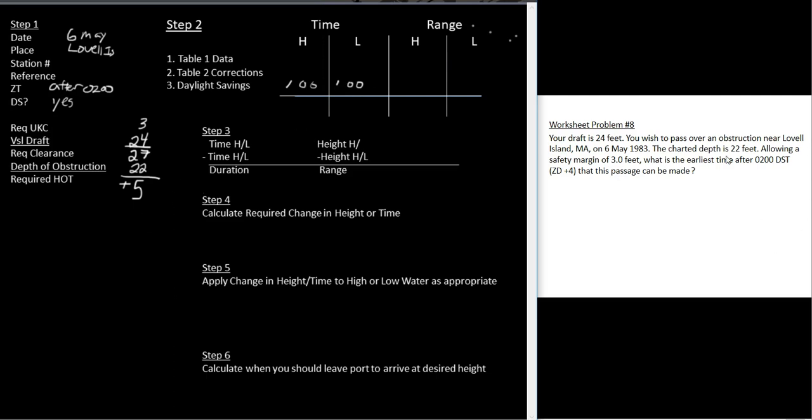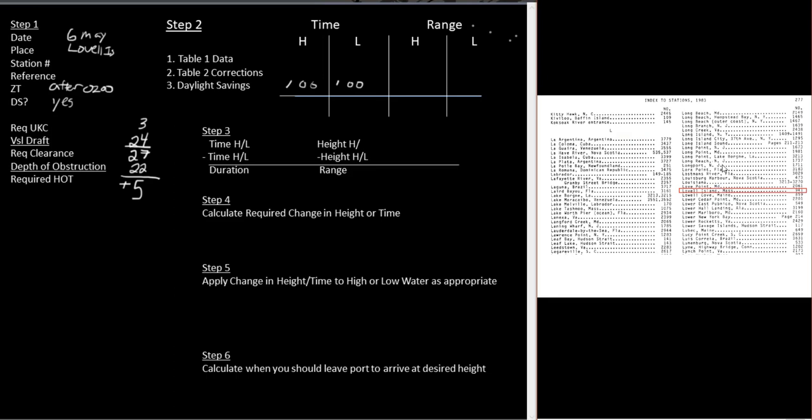Well, Lovell Island, it's not one of the stations. It's one of the subordinate stations. So what we're going to have to do is go into the back of the book, into the index of stations, and find Lovell Island. And it turns out that it's station 941. So I'm just going to go ahead and write this there. Now, you don't have to do all this stuff, but I find it's good because if I do it, for some reason, if I want to go back and look up, if I want to go back and check my work, I don't have to go back to all the tables and figure out where everything is.